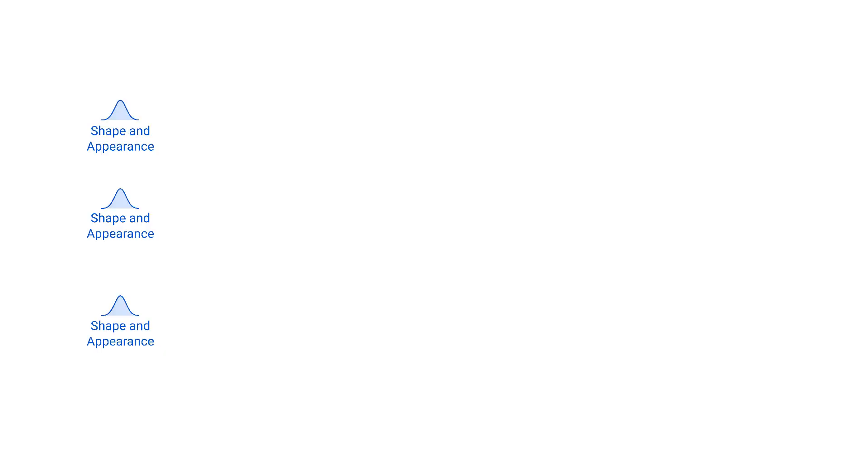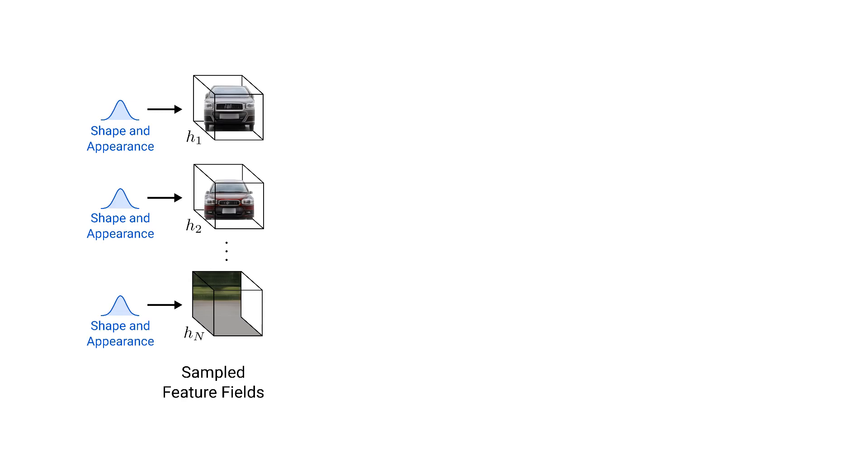Instead of sampling one single code for the entire scene, we start off by sampling individual shape and appearance codes for each object in the scene and for the background. These will give us individual feature fields which all live in a canonical space.